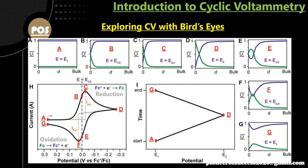I will share all the reference content so you can do cross-reading for deeper understanding. In this example, the scan starts from a high positive value and goes negative, so the upper part is reduction: Fc⁺ + e⁻ → Fc. The lower part shows oxidation: Fc → Fc⁺ + e⁻. At the start of the reaction, only Fc⁺ is present — shown in blue (normalized to 1) — and Fc (shown in green) starts at zero concentration.